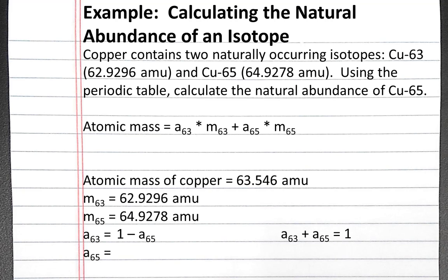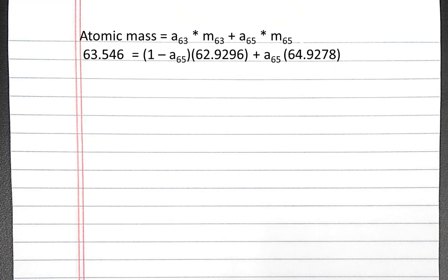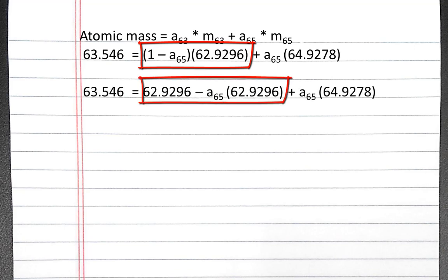We can plug these into the equation above, and we have one unknown, which is the abundance of copper-65. So we can solve for the abundance of copper-65 by first distributing 1 minus the abundance of copper-65 times 62.9296.